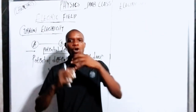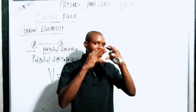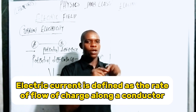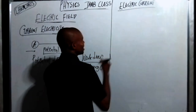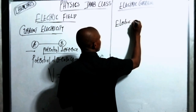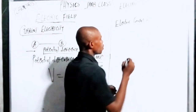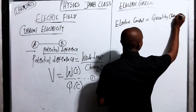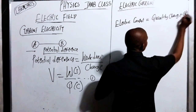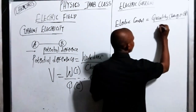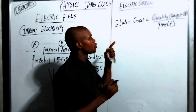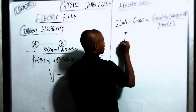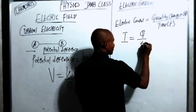Now, what is electric current? The rate of flow of charge along a conductor is called electric current. It depends on the charge and the time it takes. So electric current I equals Q over t — the quantity of charge Q that flows divided by the time t it takes to flow along the conductor. Current is represented as I equals Q over t.